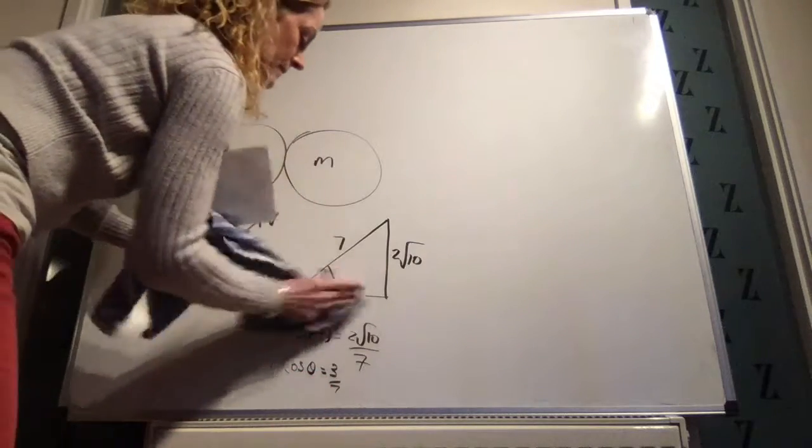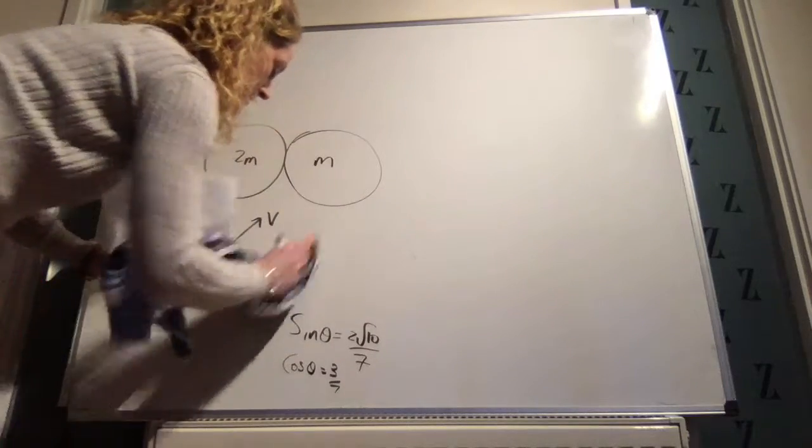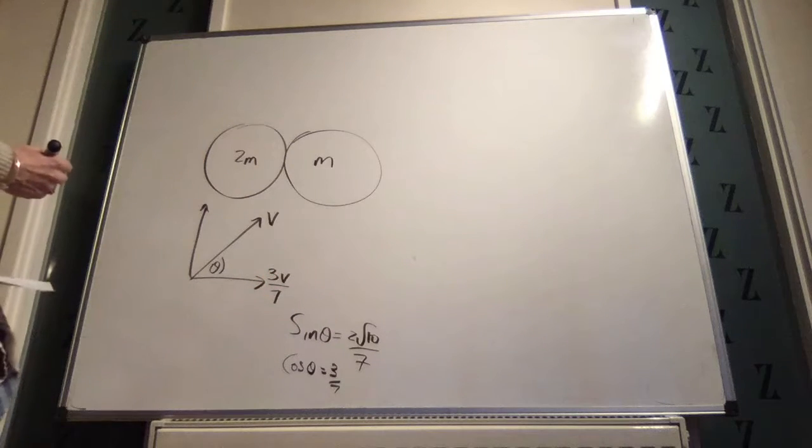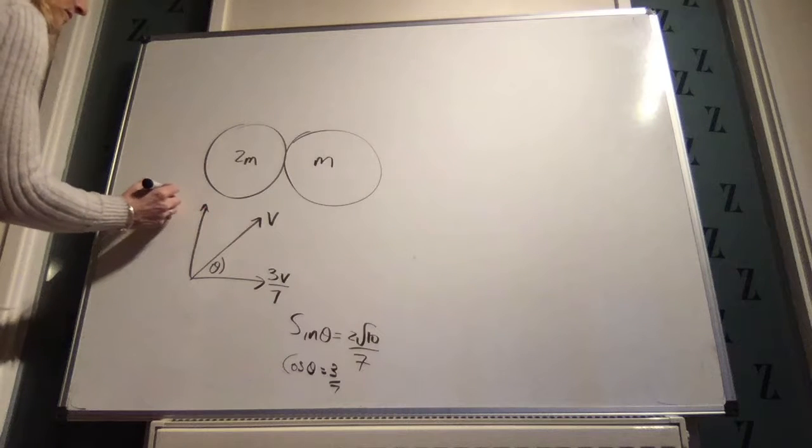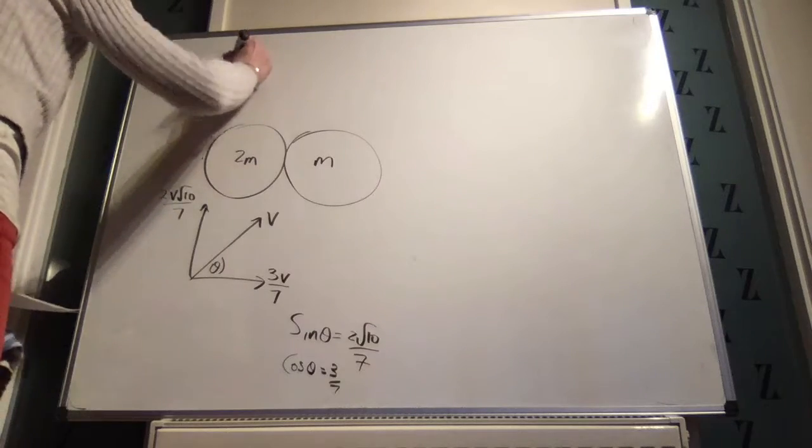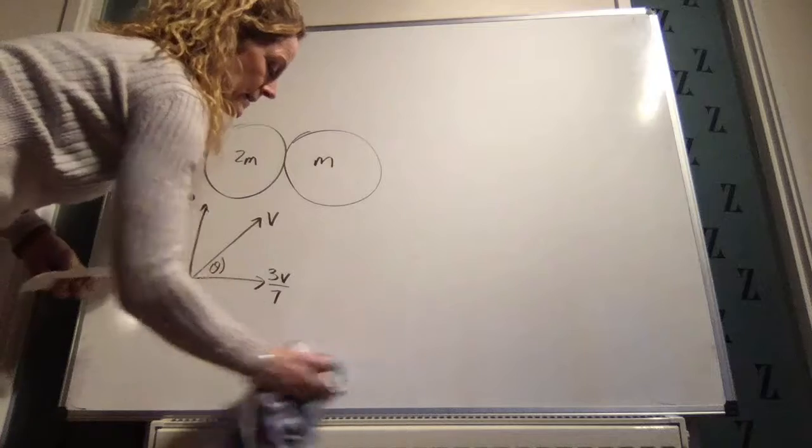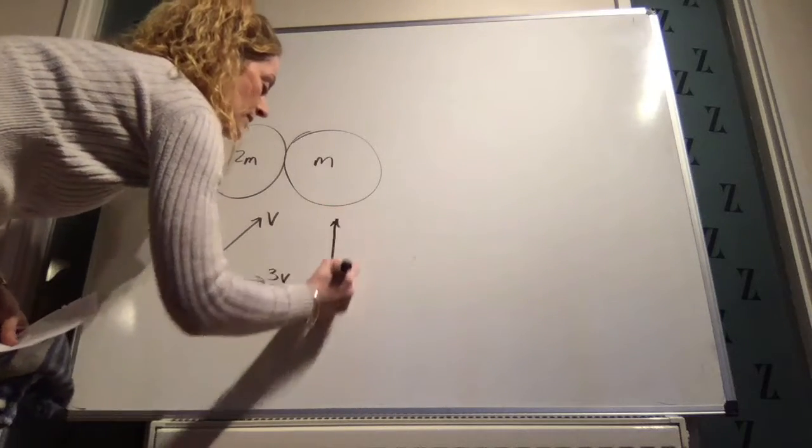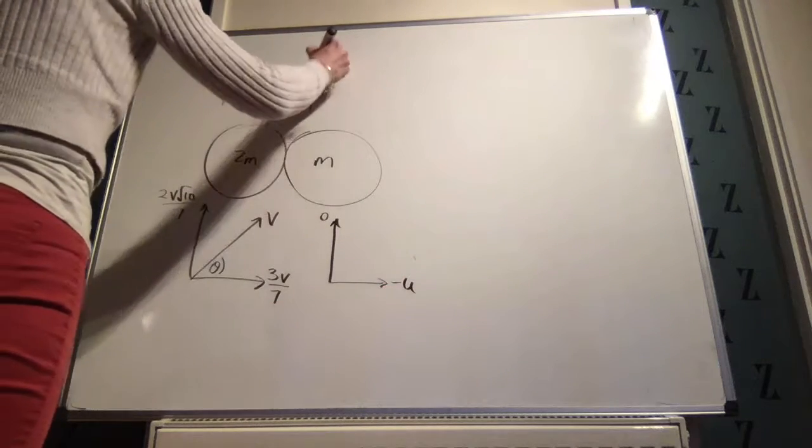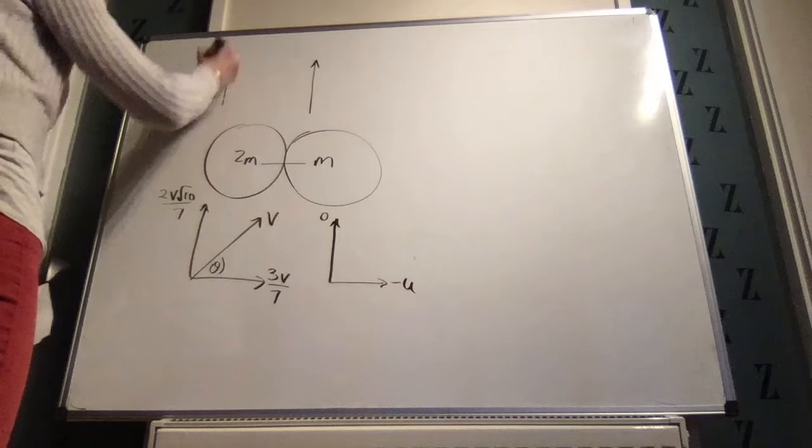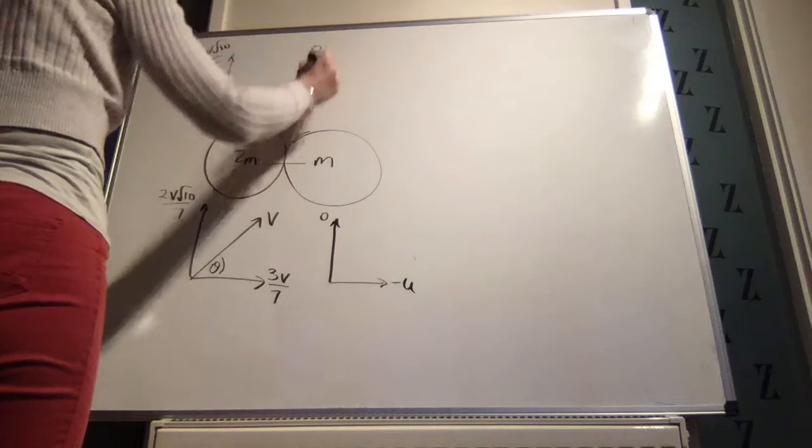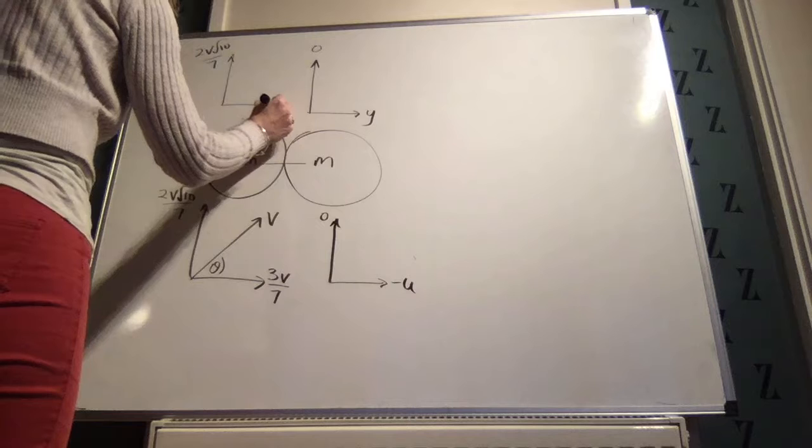So the sine of theta is 2 root 10 over 7. We already know the cosine of theta is 3 over 7. So now we know that this is v cosine theta, so v times 3 over 7. This is v sine theta, so that is 2v root 10 over 7. The velocities in the perpendicular direction, this one we're told is going at velocity 0 in this direction and minus u in this direction. So we know that the velocities perpendicular to the line of centres don't change, so this is 2v root 10 over 7, and this one is 0. Call this y, call this x.